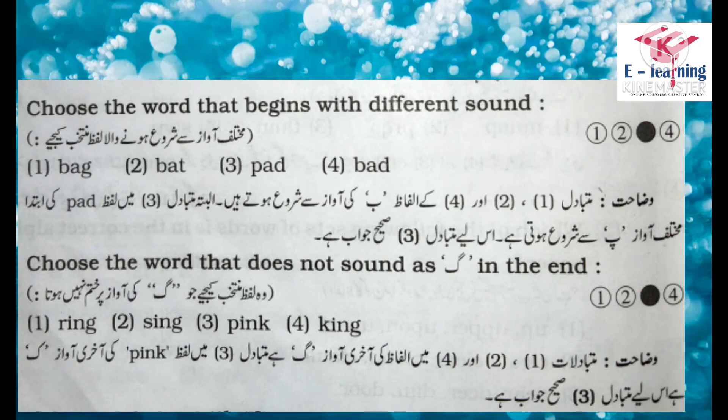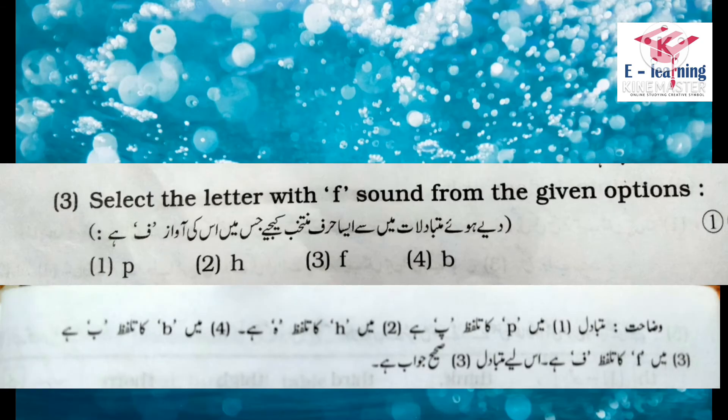Question number 4: Choose the word that does not sound like 'go' in the end. وہ لفظ منتخب کیجیے جو 'go' کی آواز پر ختم نہیں ہوتا۔ Options: Ring, Sing, Pink, King. Explanation: متبادل تین میں لفظ 'pink' کی آواز 'k' ہے، اس لیے متبادل تین صحیح جواب ہے۔